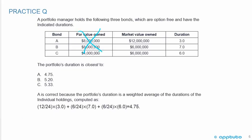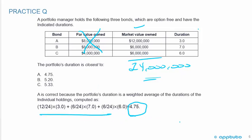Again, a very easy question. We don't need the par value — we need the market value. 12 million plus 6 million plus 6 million gives us 24 million, the market value of the portfolio. Portfolio duration is the weighted average: bond A is 12 over 24 times 3, plus bond B 6 over 24 times 7, plus bond C 6 over 24 times 6. The correct answer is A: 4.75.